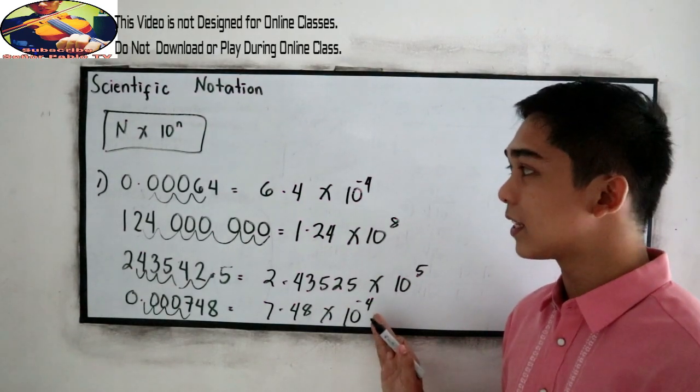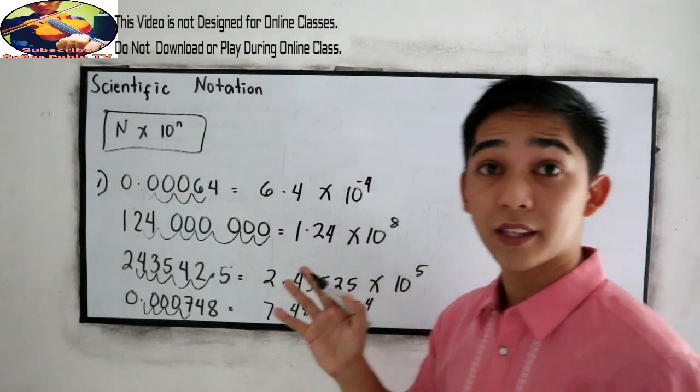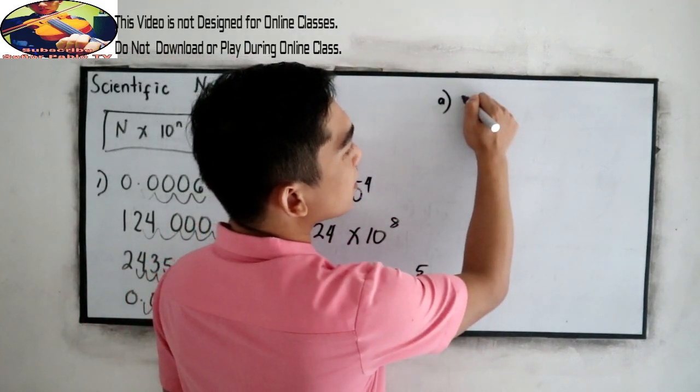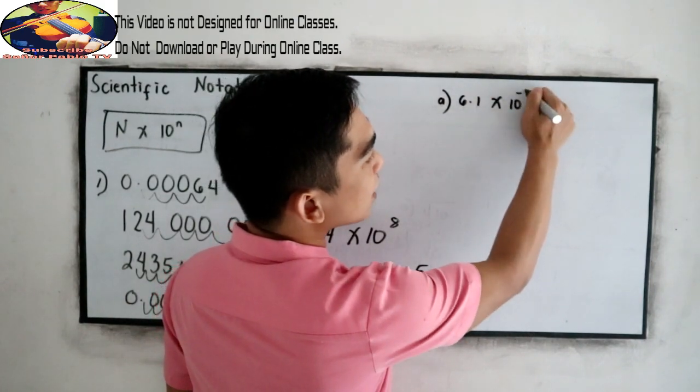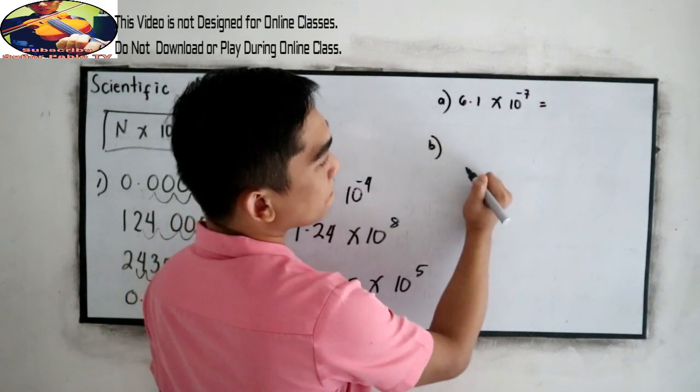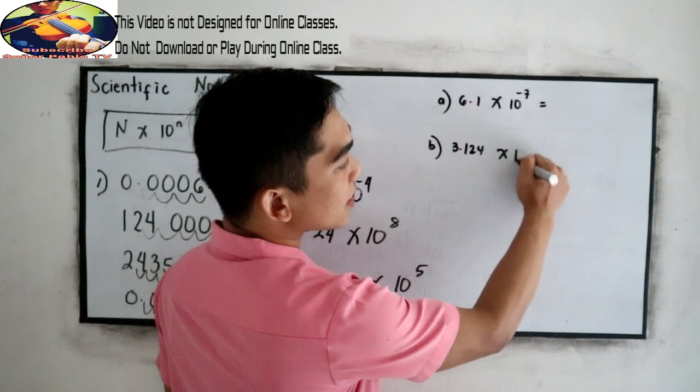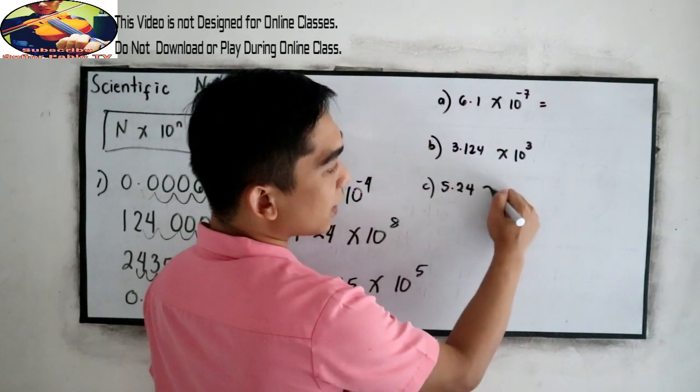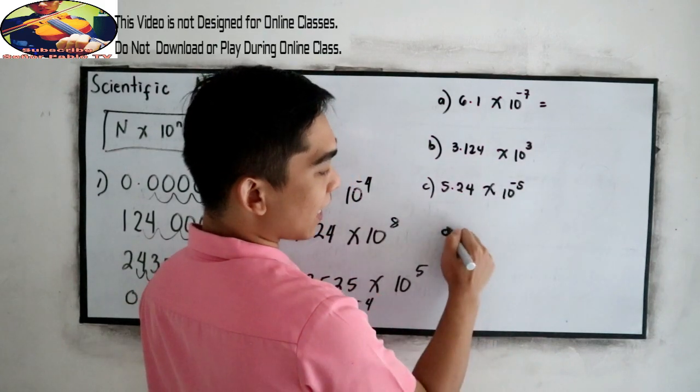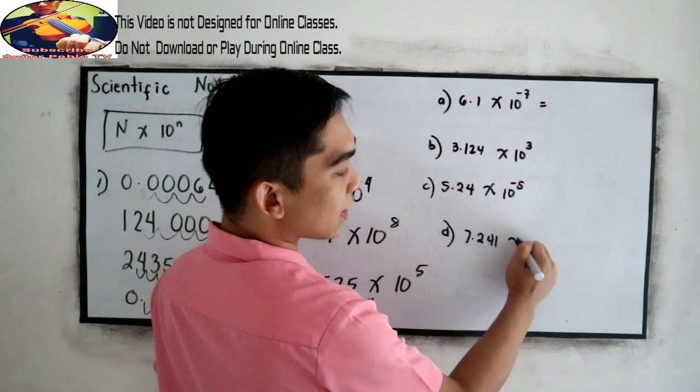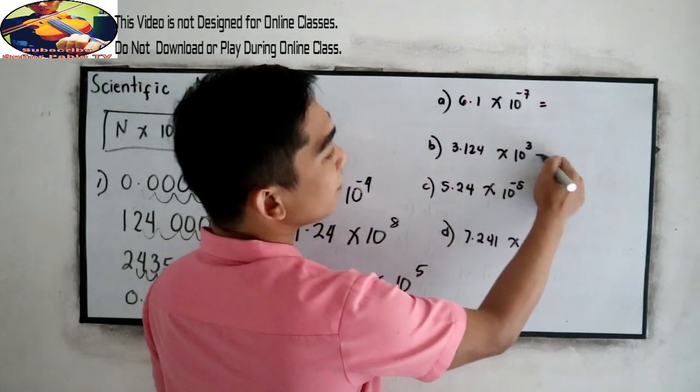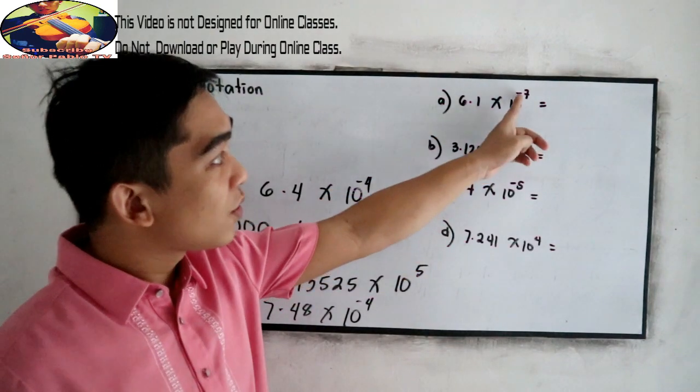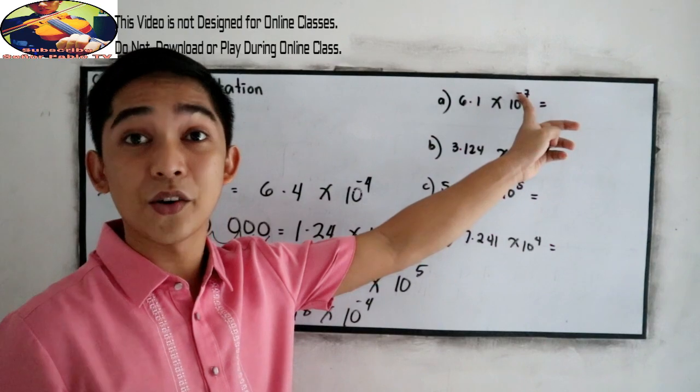So how about if the given is in scientific notation, we're going to write into decimal form. So let's say we have 6.1 times 10 raised to negative 7, letter B, 3.124 times 10 raised to 3, letter C, 5.24 times 10 raised to negative 5, and letter D, 7.241 times 10 raised to 4. We're going to find the decimal form of this scientific notation.